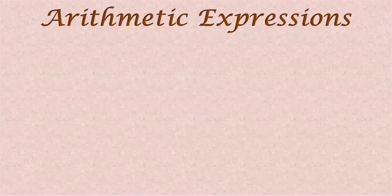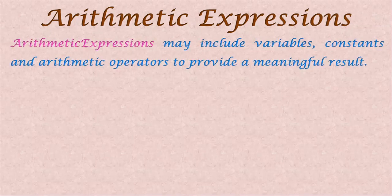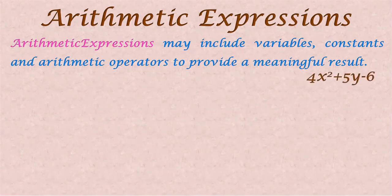Arithmetic expressions are what we learned already in mathematics — it is the same thing. They may have variables, constants and arithmetic operators. For example, we can say 4x squared plus 5y minus 6. You can see that there are variables, constants and also the operators.